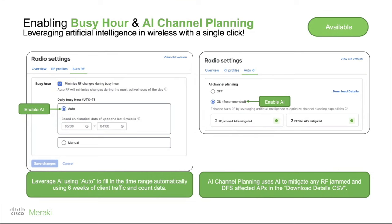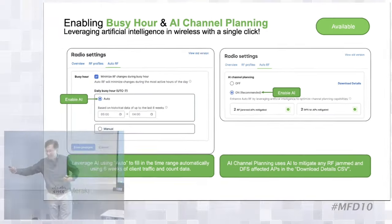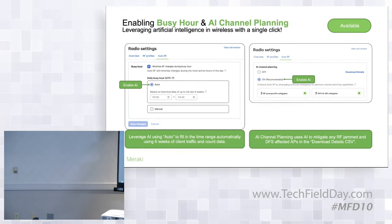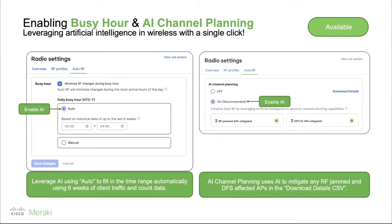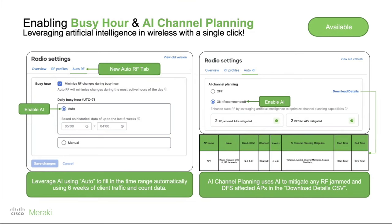For example, can I have a single button to download all DFS events from the last six weeks? Yes — that's what we built. We have a one-button download detail that allows you to download all the events that happened throughout your network: what DFS events occurred, which APs were impacted, and how long each AP had to wait before reusing that DFS channel. Now we have historical context, and the network becomes far more stable and reliable.